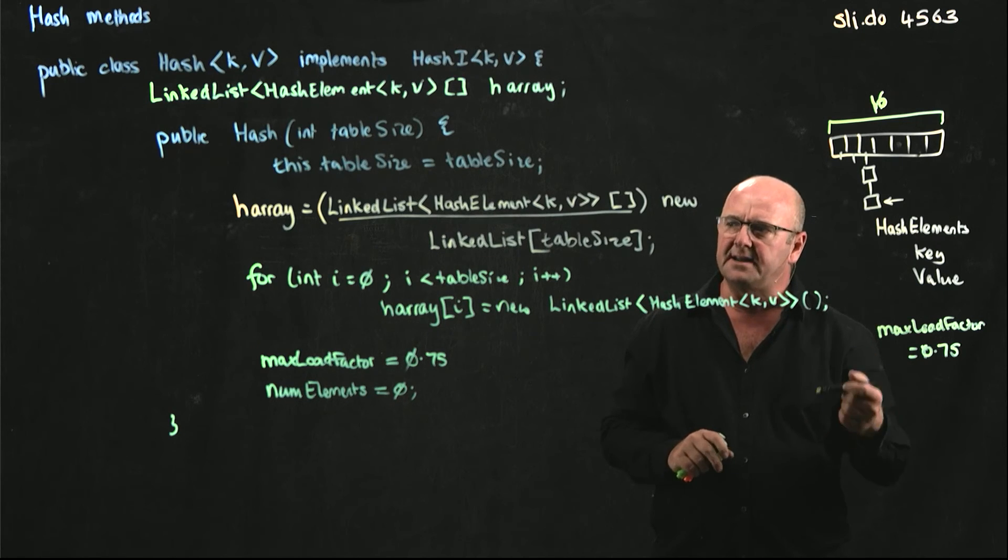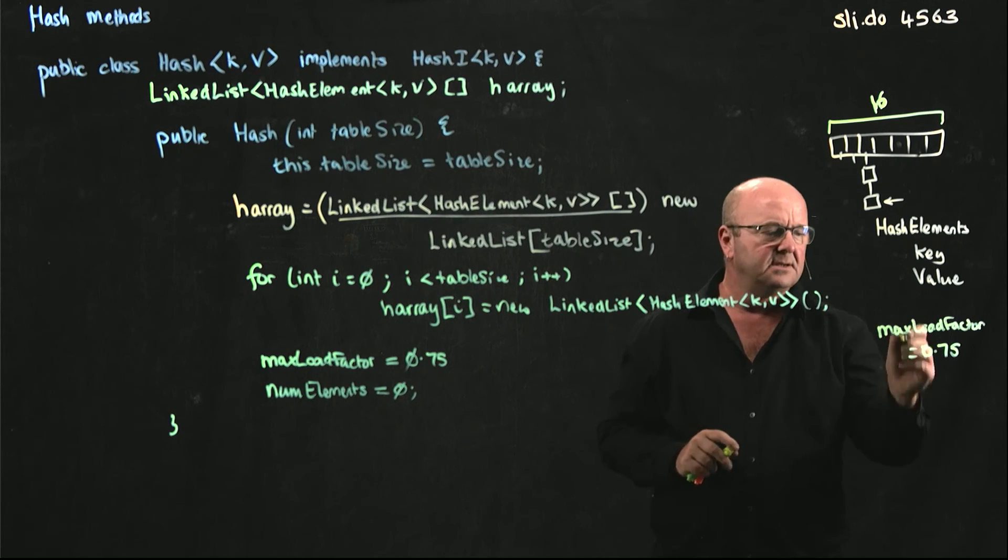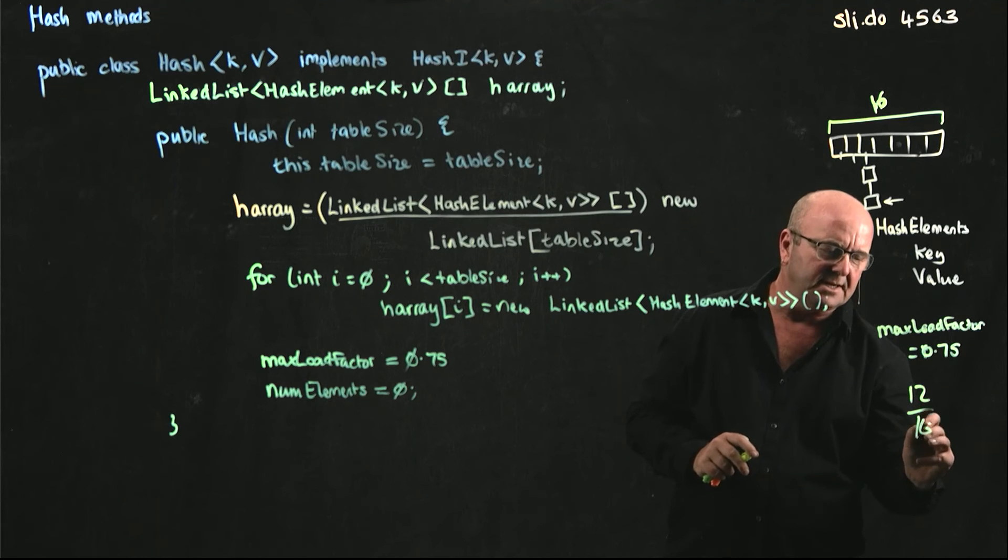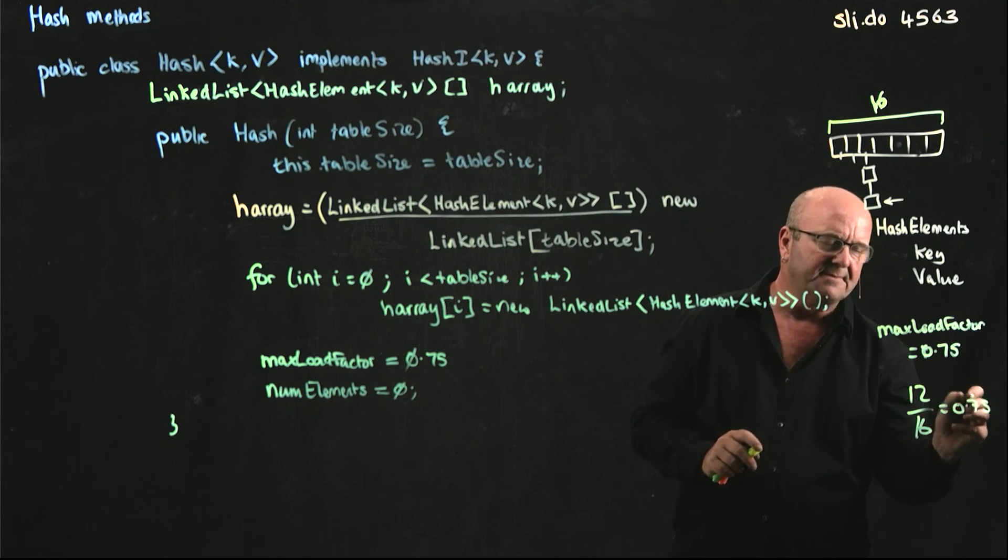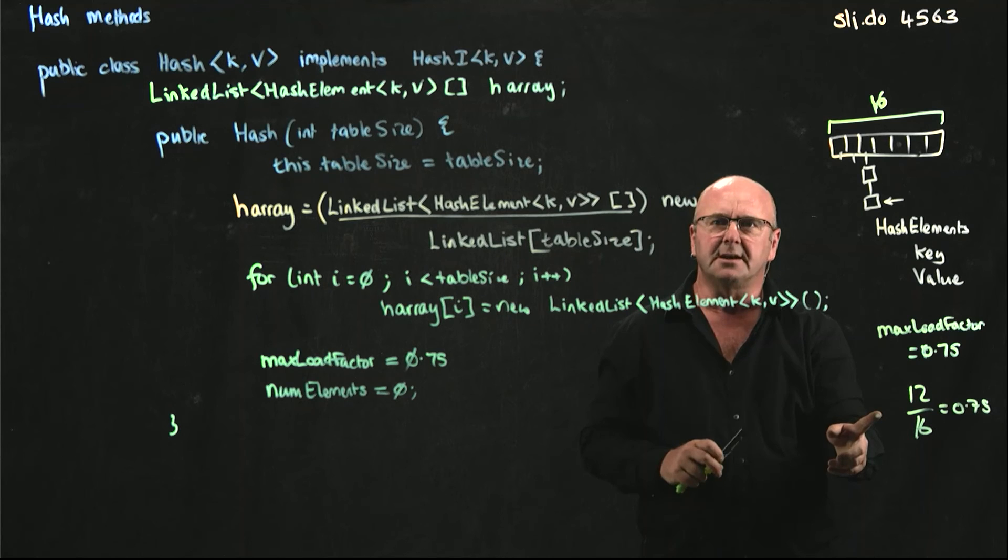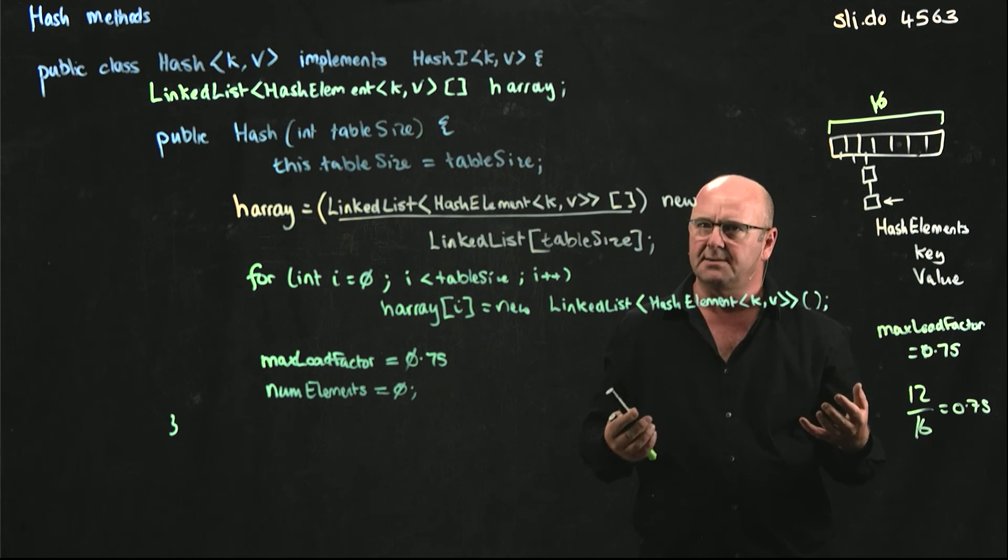12. After you've added 12 elements, 12 over 16 is 0.75. So either on the 12th or the 13th element that you add, it will resize the table.